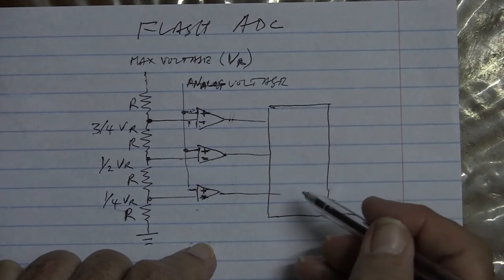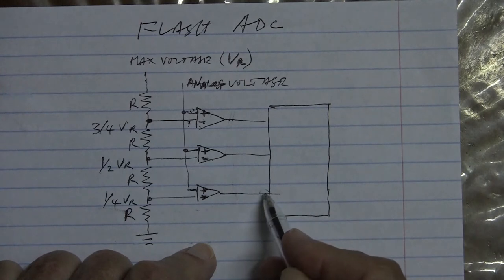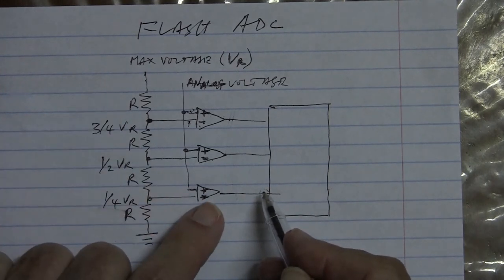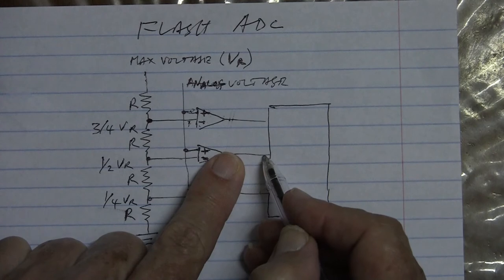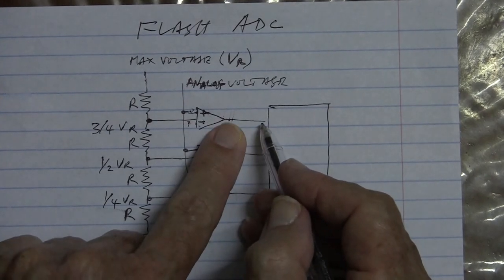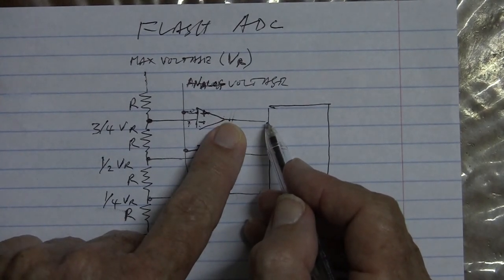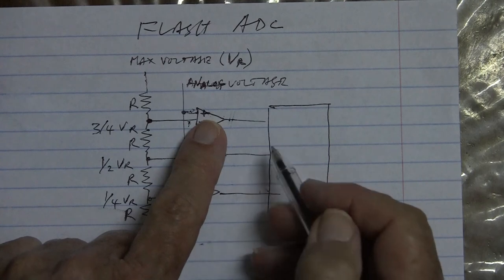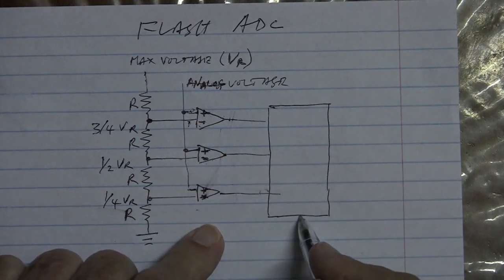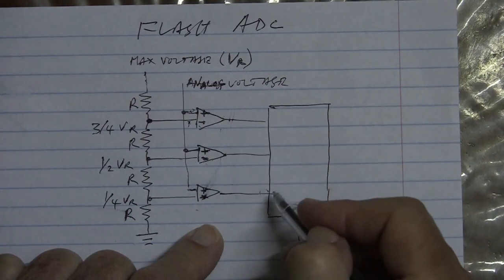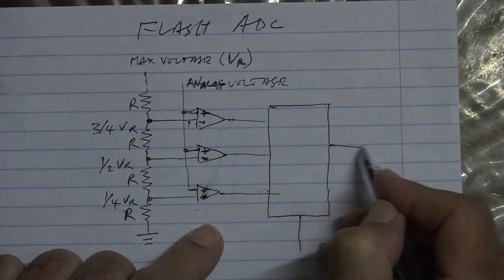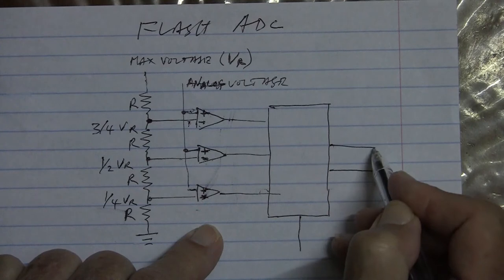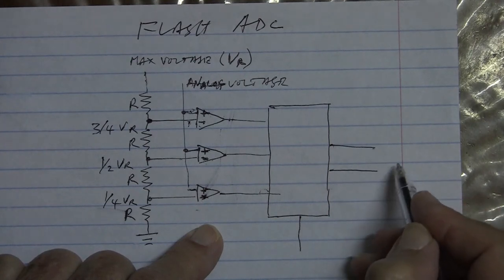So what's going into the encoder is first this one becomes a one with a rise in voltage, then this one and this one together. And finally, when the voltage rises sufficiently higher, all three of them will be one.